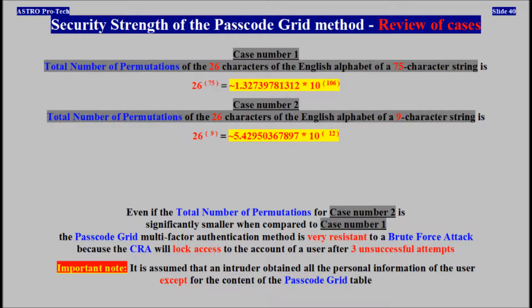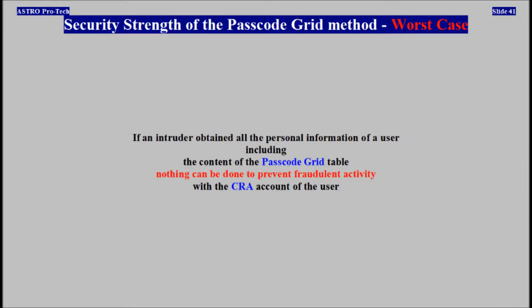Review of Cases: The Passcode Grid Multi-Factor Authentication Method is very resistant to a brute force attack because the CRA always locks access to the account of a user after three unsuccessful attempts. If an intruder obtained all the personal information of a user, including the content of the passcode grid table, nothing can be done to prevent fraudulent activity with the CRA account.